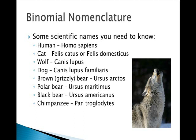Dogs and wolves can interbreed and produce viable offspring. Grizzly bears are Ursus arctos. Polar bears are Ursus maritimus, because they swim in the ocean. Black bears are Ursus americanus, even though they exist in other countries as well. And chimpanzees are Pan troglodytes.